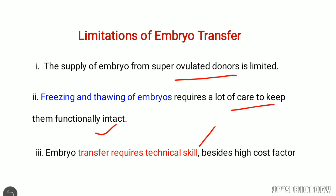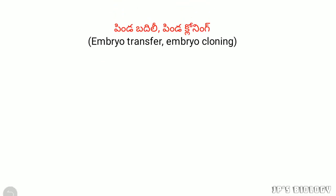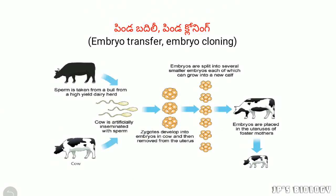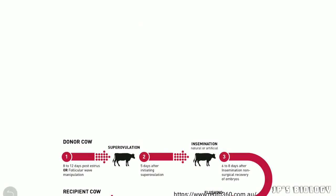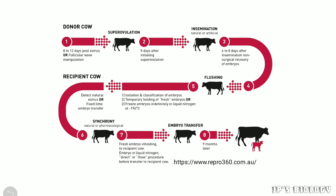Embryo transfer requires technical skill besides a high cost factor. Because of these limitations, embryo transfer has constraints. Additionally, there is embryo cloning — PINDA cloning — where we split the embryo, allow it to grow, and then transfer the embryo.